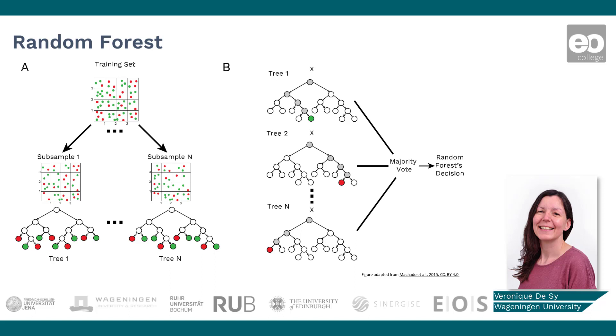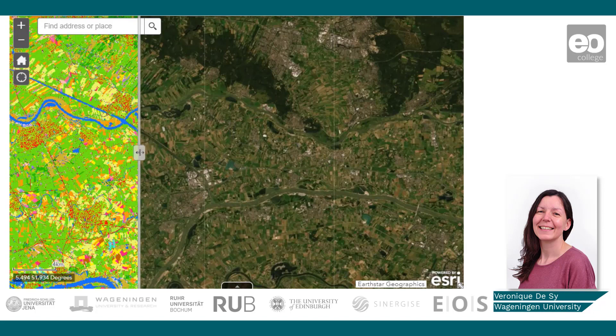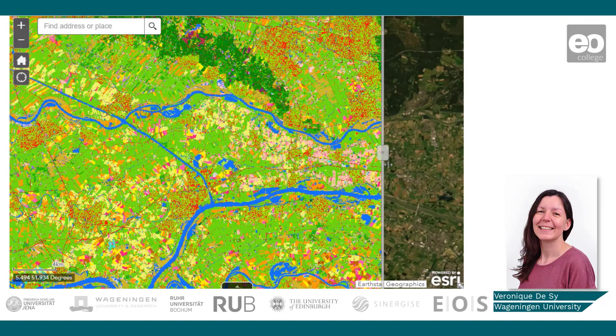These are just a few examples of classification algorithms — there are many more out there. We realize this is quite a lot of information to take in. For now, it is important to understand the basic principles underlying spectral image classification. If you decide to apply an image classification on your own data, there are many resources available to gain more in-depth knowledge about specific classification algorithms.